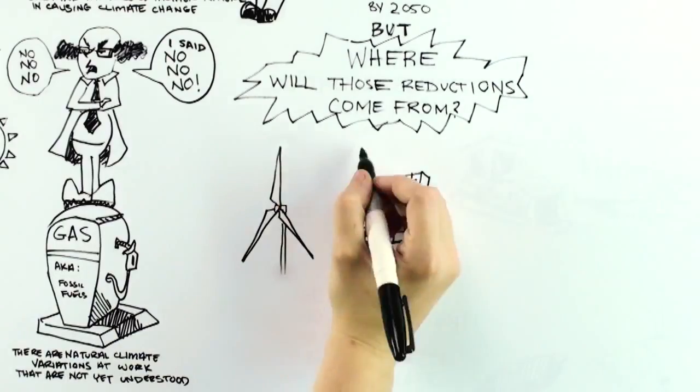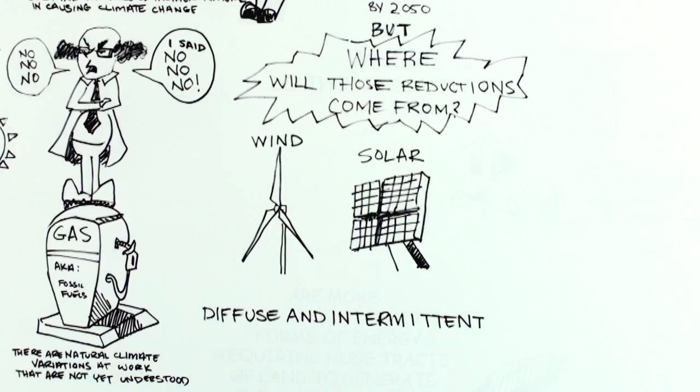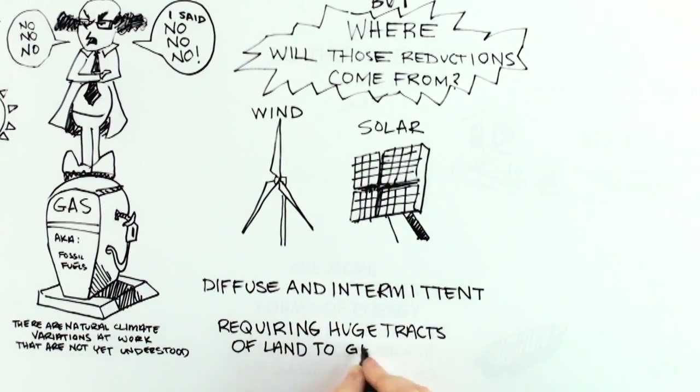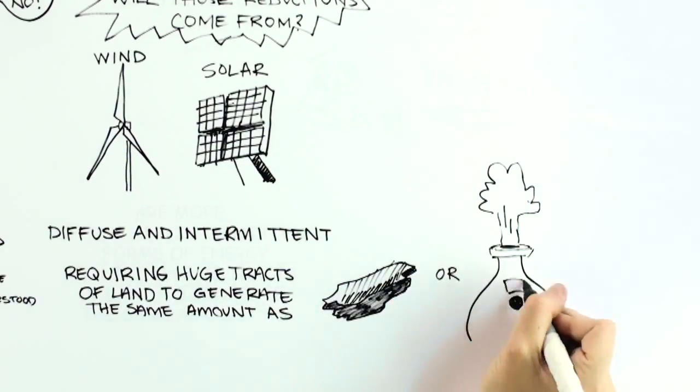Solar and wind are two diffuse and intermittent forms of energy, requiring huge tracts of land to generate the same amount of energy as a single coal-fired or nuclear power plant.